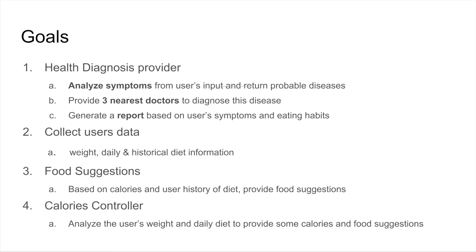We have four main components in our system. The first is a healthcare diagnosis provider — a user will not know what disease they have, but they can tell us what symptoms they are facing. We will return a probable disease, find the three nearest doctors, and generate a summary report sent to the user so they can take it directly to the doctor instead of re-explaining their symptoms.